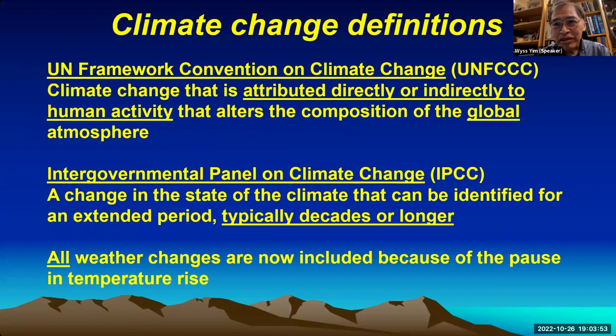Definitions of climate change are really a problem. If you look at the United Nations definition, they assume they know what is directly and indirectly causing climate change due to human activity. However, most of the climate change they're talking about is not really global — it's more regional, and I'll show you why later. The IPCC singles out carbon dioxide as the culprit, and this is not scientifically proven. Because of the pause in temperature rise, all weather changes are now included under climate change, just to confuse the public.